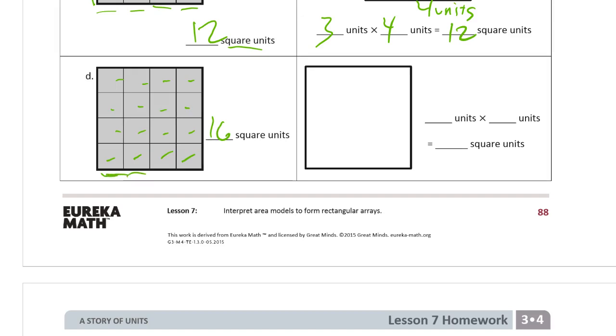And it's side lengths 1, 2, 3, 4 on the bottom and 1, 2, 3, 4 on the left side there. So these are 4, 4 units. And this is 4 units. 4 units times 4 units equals 16 square units.